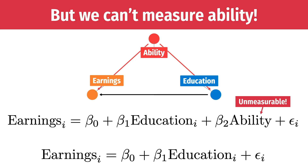What we're left with is this: we can include education because we can measure years of schooling. But once we do that, the ability confounding both education and earnings gets moved into the error term and we can't see it anymore. The fact that the error term and the education coefficient are tied together means education is endogenous — and measuring the effect of education on earnings is not the true exogenous effect, which is a problem.